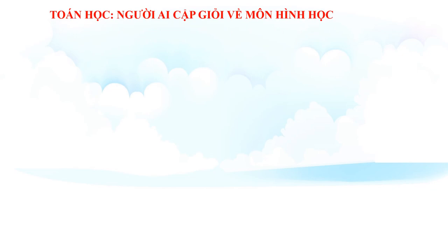Thành tựu tiếp theo của người Ai Cập đó chính là về toán học. Người Ai Cập giỏi về môn hình học. Tại sao như vậy? Bởi vì hàng năm, nước sông Nile sẽ dâng cao từ tháng 7 cho đến tháng 10 và sẽ khiến cho ranh giới giữa các thửa ruộng bị xóa nhòa. Nên mỗi khi nước rút thì người Ai Cập cổ đại phải tiến hành đo đạc lại diện tích, vì vậy họ giỏi về hình học. Và những hiểu biết này chính là cơ sở để họ xây dựng những kim tự tháp kỳ vĩ.